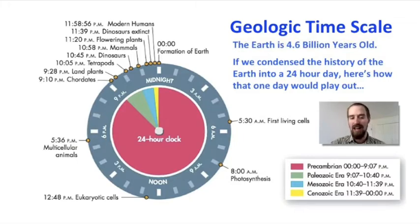To understand just exactly how long that is, let's take a look at Earth's history as if it had all occurred within one 24-hour day. If the Earth was formed at midnight, 12 a.m., then the first living cells appear in the fossil record at about 5:30 a.m., and at 8 a.m., photosynthesis starts filling our atmosphere with oxygen. The first eukaryotic cells with nuclei and other membrane-bound organelles appear at about 12:48 p.m. in the afternoon. We're already over halfway through our day, and all we've got so far are prokaryotic cells, photosynthesis, and eukaryotic cells. At about 5:36 p.m., multicellular animals appear, and at 9:10 p.m., we see the first organisms with a dorsal nerve cord, the first chordates. At 9:28 p.m., the first land plants moved out of the sea and onto the continents, and at 10:05 p.m., the first tetrapods, organisms with four legs and an internal skeleton, start to walk around in the seas and then on land.